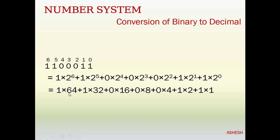Now the next line: 2 to the power 6 equals 64, 2 to the power 5 equals 32, 2 to the power 4 equals 16, 2 to the power 3 equals 8, 2 to the power 2 equals 4, 2 to the power 1 equals 2, and 2 to the power 0 equals 1. Remember: any number to the power 0 equals 1.